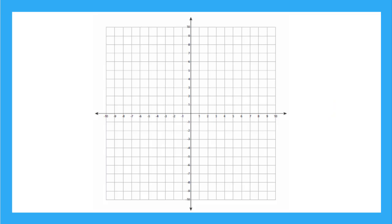We've learned how to find the distance between two points when they have the same x-coordinate, like these two, or the same y-coordinate, like these two. Remember that we find the distance of each point from the axis between them, and then we add those distances together. And that total distance is the distance between the two points.